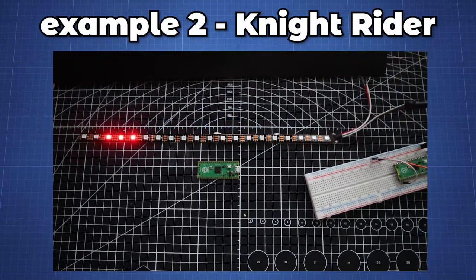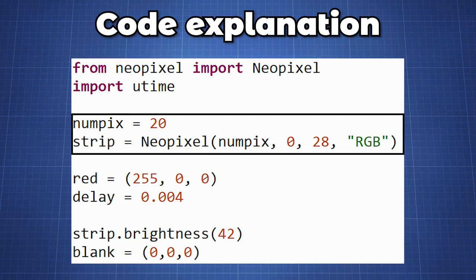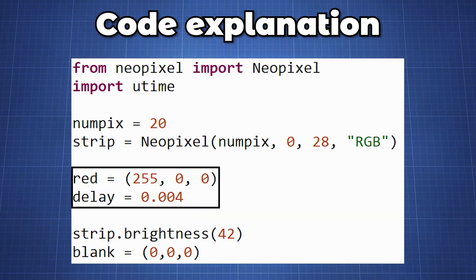Our second example is the Knight Rider LEDs. Again we will import the same libraries except for the random. Set the number of pixels and initialize our strip. This time we will only use red LEDs and a short delay.